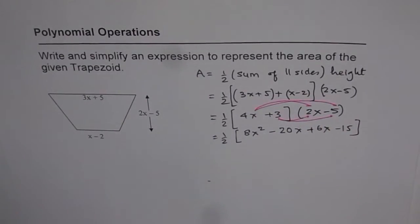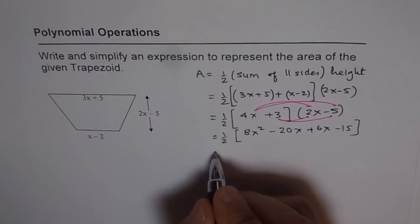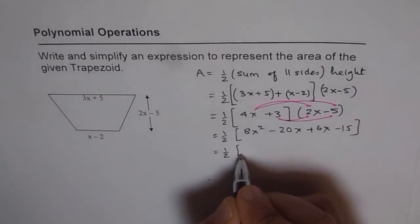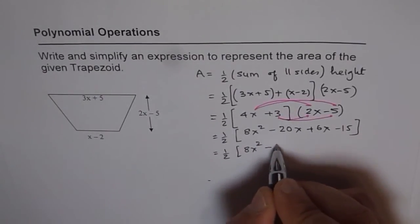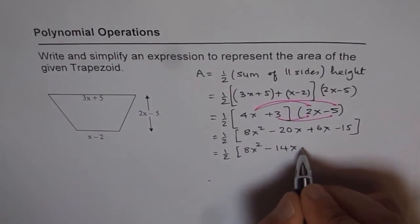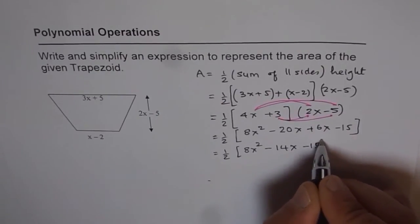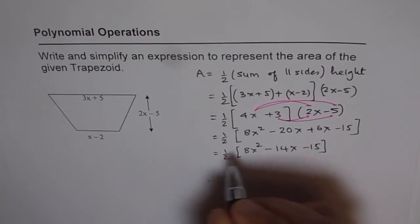Now, we can combine the like terms and simplify. So, we get half of 8x squared, minus 20x plus 6x gives us minus 14x minus 15. So, that is kind of simplified.